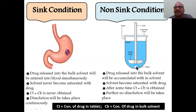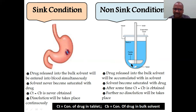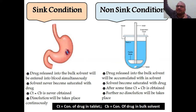In the dissolution apparatus you can find the tablet and a bulk solvent. When dissolution starts, the drug is released from the tablet into the bulk solvent. The concentration of the drug in the bulk solvent goes on accumulating — it stays in the vessel only, never going out.